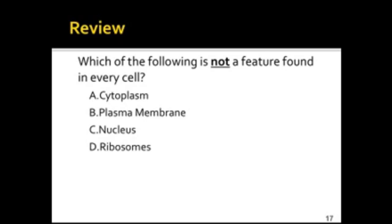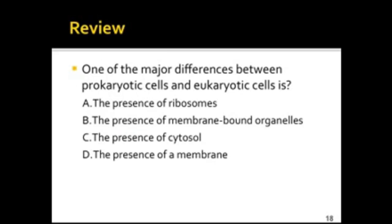Which of the following is not a feature found in every cell? Think about it. Can you think of what the right answer is? Well, I hope you came up with it. The answer is C, nucleus. All cells have DNA, but not all cells have a nucleus. Only eukaryotic cells have a nucleus, which remember is a membrane-bound enclosure around that DNA.